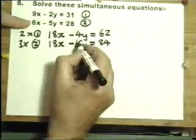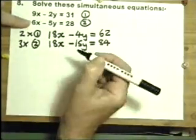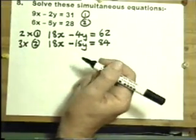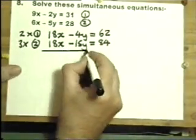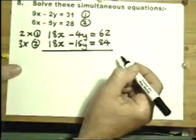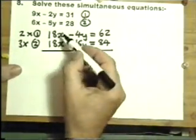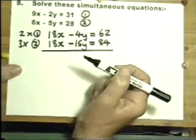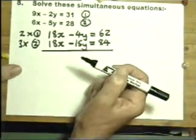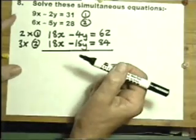When you've got the two numbers the same, sometimes you add and sometimes you subtract. Now, how do you decide which? Well, try adding and see what happens. If you add these two lines together, you'll get 36x. Well, that's not very good because you want things to disappear, so it can't be adding. So take away.